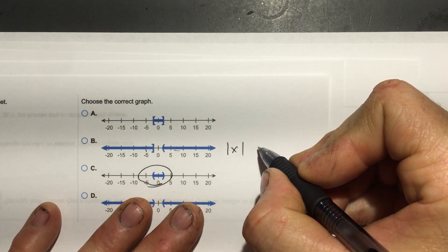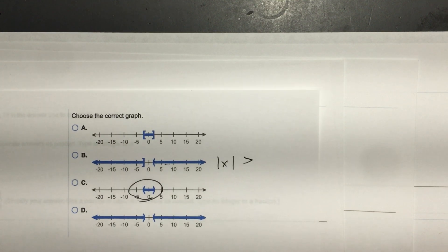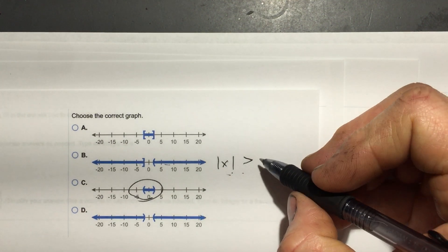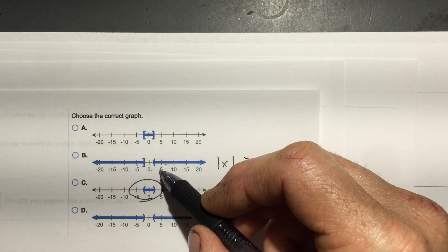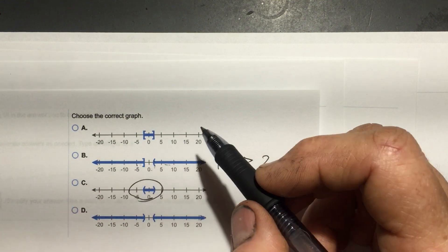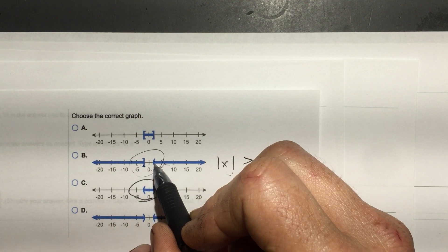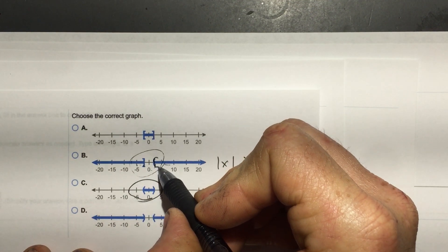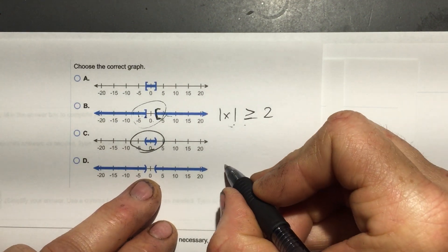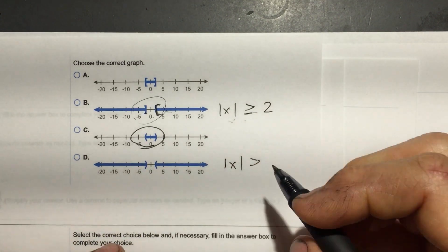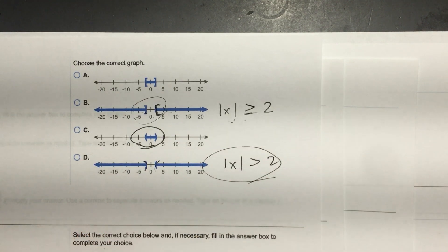See here how these go opposite — that means it's going to be a greater than; absolute value greater than 2 because they don't connect, they go opposite. Then one choice has mixed brackets and parentheses — that can't be right; they're either both brackets or both parentheses. So the last one: absolute value of x is greater than 2, with parentheses and no equal-to line.